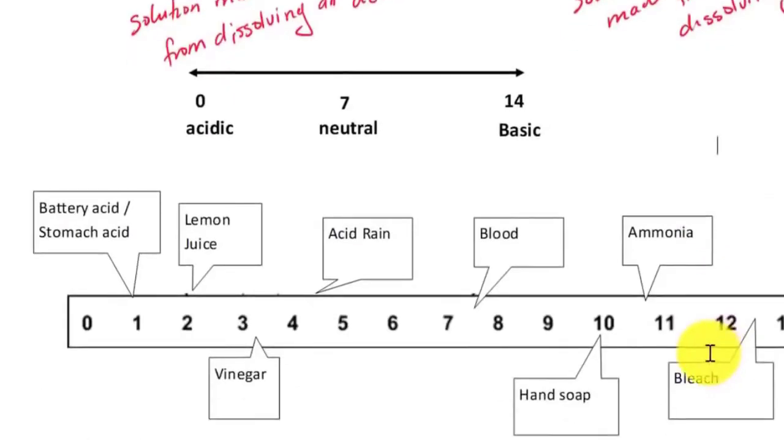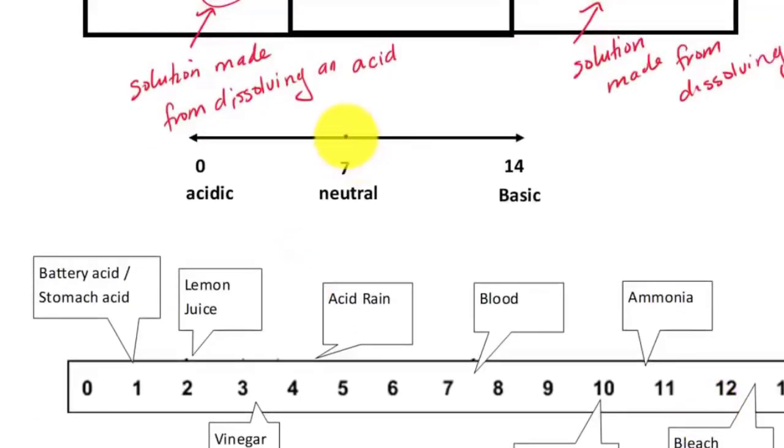Now let's look at the pH scale. Why do we care about the number 7 so much? Because this number 7 represents a neutral value. Basically, the number of acid and the number of base are equal to each other. So that 7 is right in the middle. For example, in this case, a common substance that has a pH of number 7 is pure water.